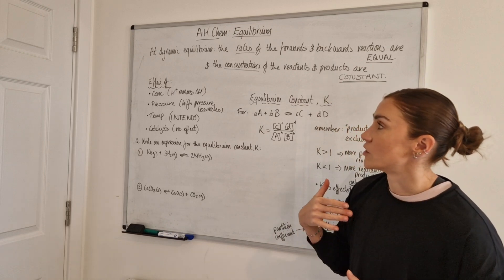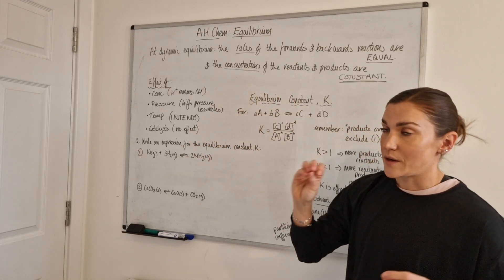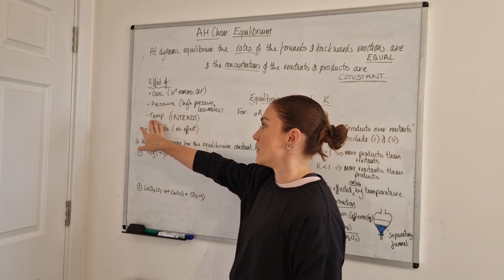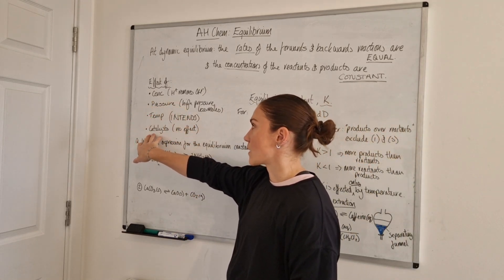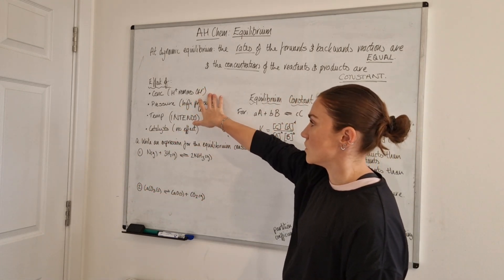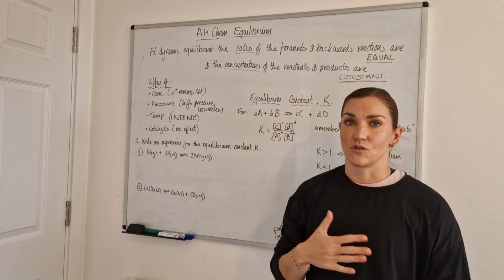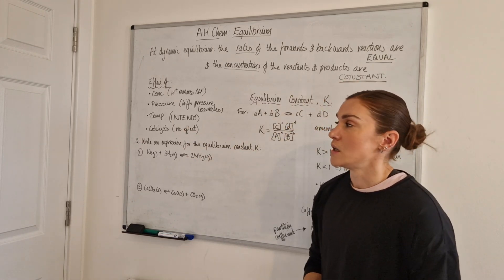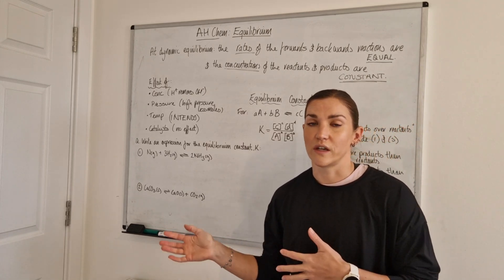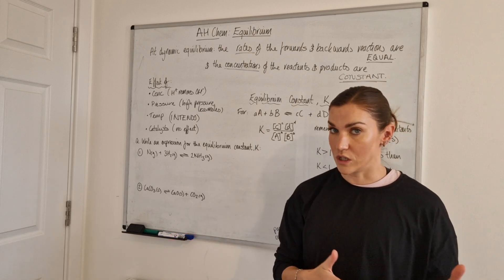At higher we learned about the effects of different things on the position of equilibrium: the effect of concentration, pressure, temperature, and catalyst. The main thing to remember about concentration is that the equilibrium always shifts to try and undo the change you've made. If you increase the concentration of something it's going to shift to remove it, and if you decrease the concentration it's going to shift to recreate it.